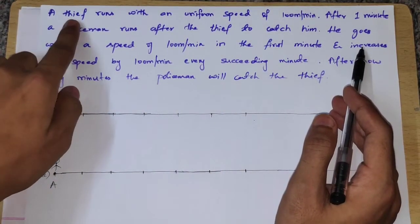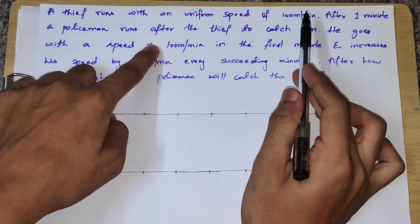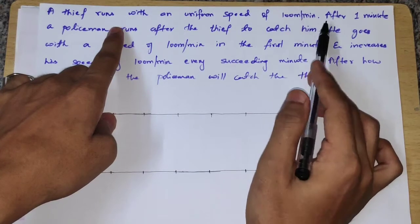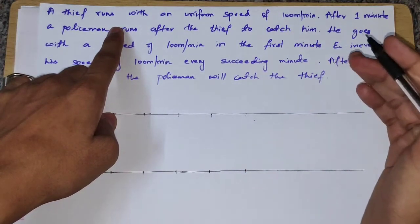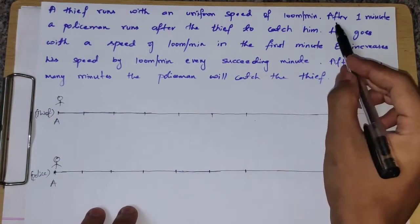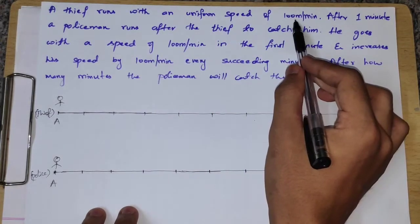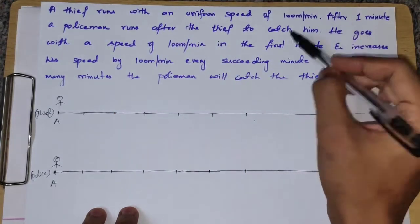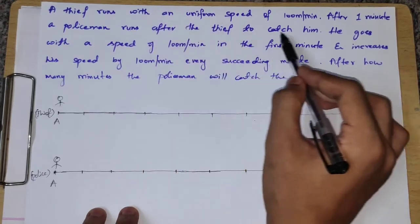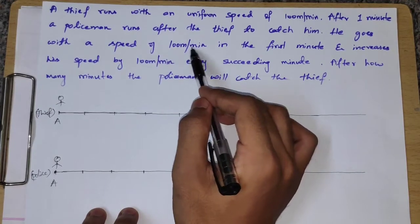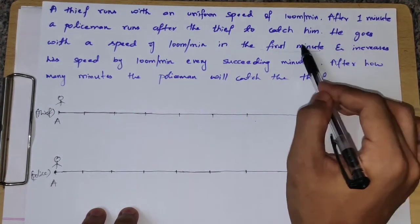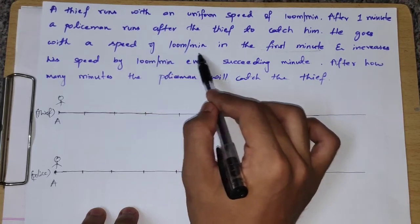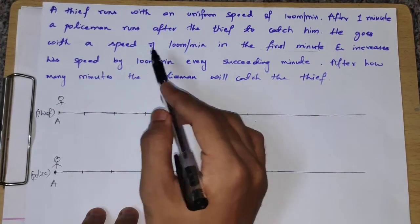A thief runs with a uniform speed of 100 meters per minute. After 1 minute, a policeman runs after the thief to catch him. The policeman goes with a speed of 100 meters per minute in the first minute.